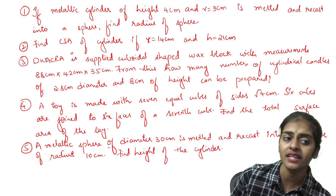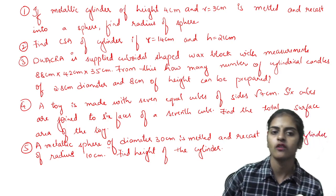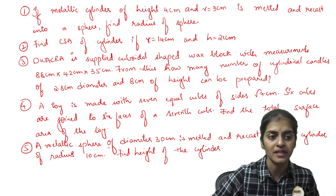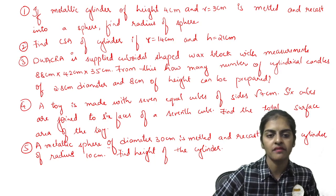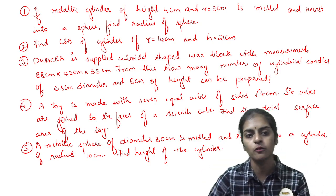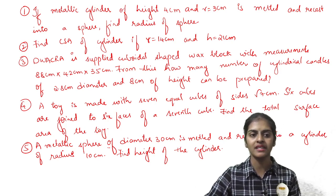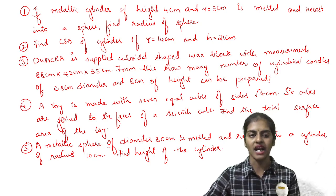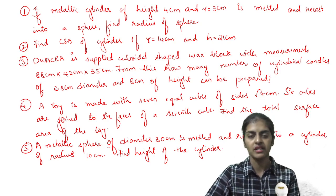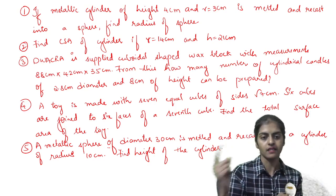Next question: Dwakra is supplied a cuboidal shaped wax box of cylindrical candles of 88 cm, 42 cm, 30 cm. LBH is given here. Whenever you have the dimensions like this, it is LBH - length, breadth and height of the cuboid. From this, how many number of cylindrical candles of 2.8 cm diameter and 8 cm of height can be prepared? So from this, you have to prepare cylindrical shaped candles. You have a total big wax box. From the big wax box, you are preparing candles, different number of candles of the same dimension.